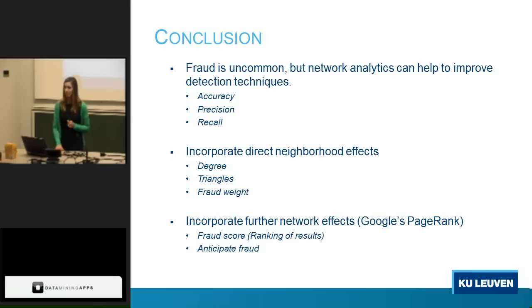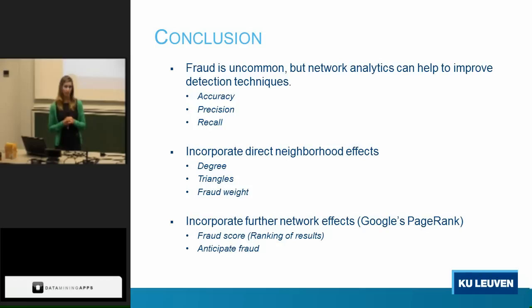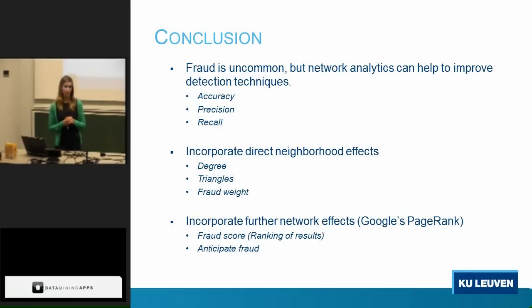To conclude: fraud is an uncommon phenomenon, but when we include social network analytics it can improve traditional fraud detection techniques in terms of accuracy, precision, and recall. We can include social network effects by focusing on the direct neighborhood, which allows us to identify features like the degree, triangles, and fraud weight. But we can also focus on the whole network through fraud propagation, which allows us to assign a fraud score to every company and every resource. And we can even anticipate fraud using these propagation algorithms. Thank you for watching. If you have any questions, you can always contact me by email.